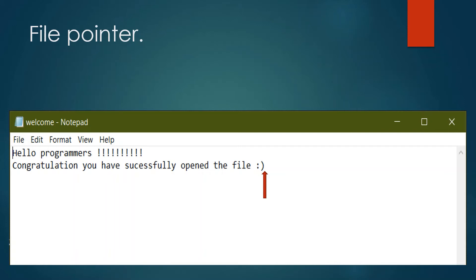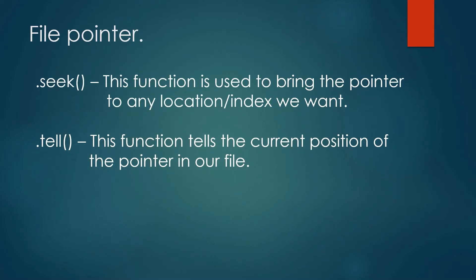We have to pull this pointer back to the beginning in order to read the content again. There are functions in Python that tell us the position of the pointer and move it to any desired location. The first function is seek — it moves the pointer to any desired location, taking an index as a parameter. To bring the pointer to the beginning, we pass index zero. The second function is tell — it returns the current position or index of the pointer in the file.